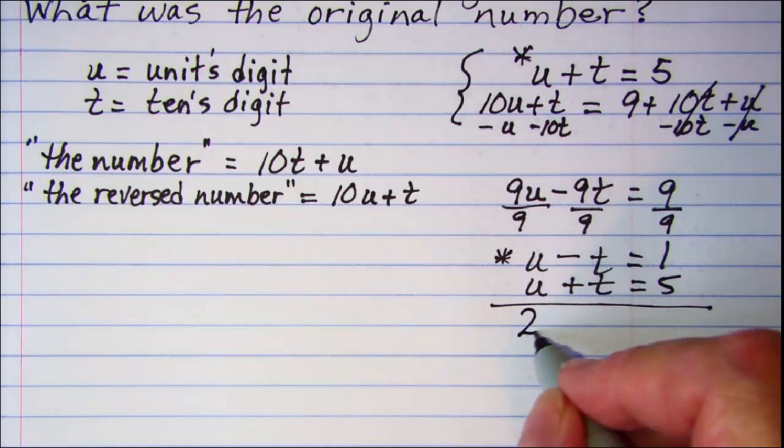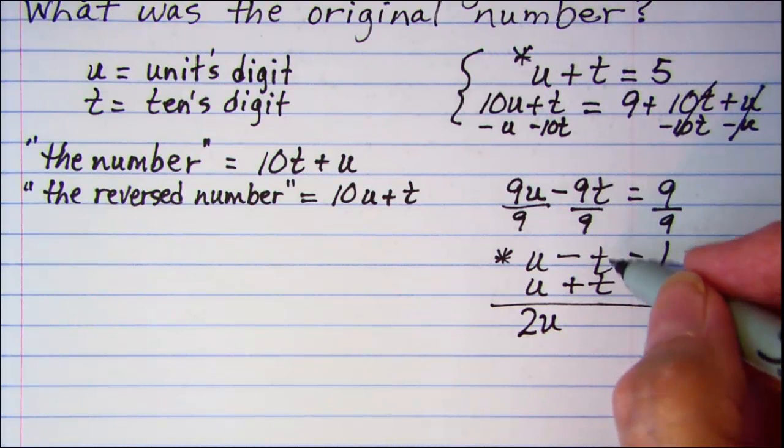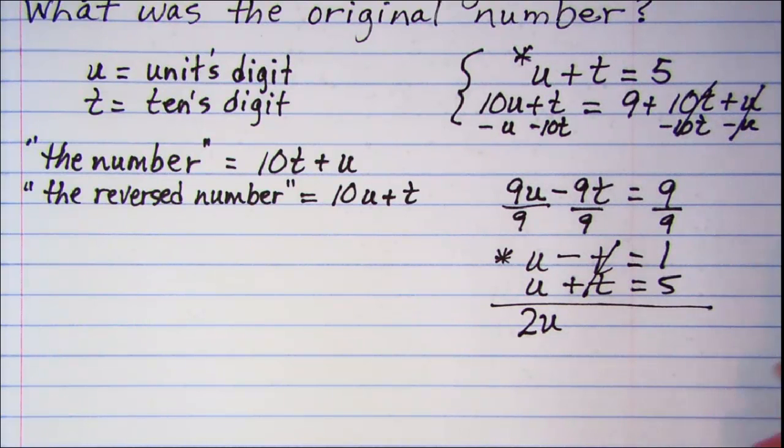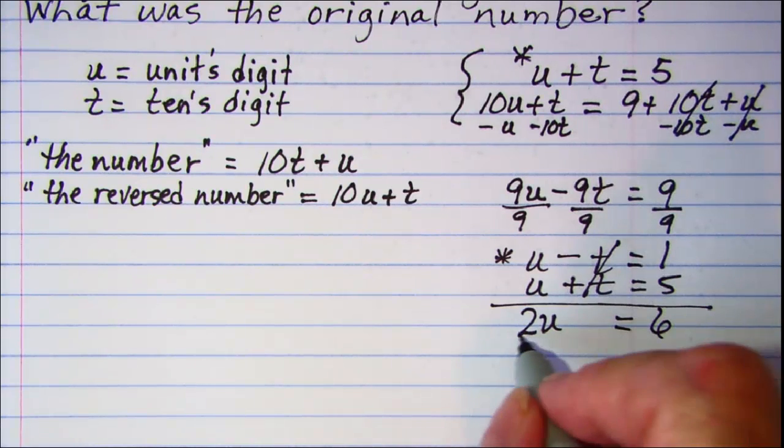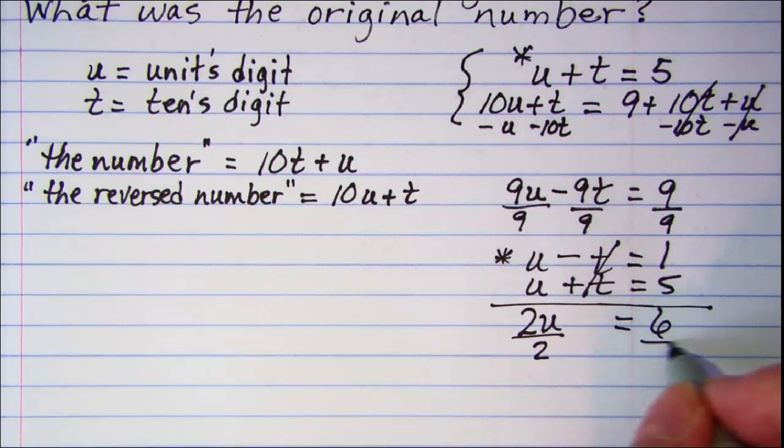U plus t is equal to 5 and I'll add those together. So, u plus u is 2u, negative t and positive t cancel and 1 plus 5 is 6. Divide both sides by 2 and u is equal to 3.